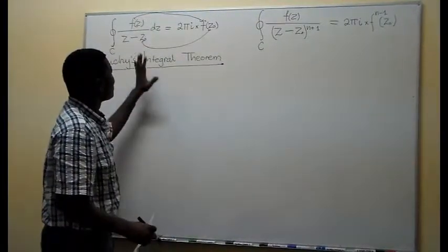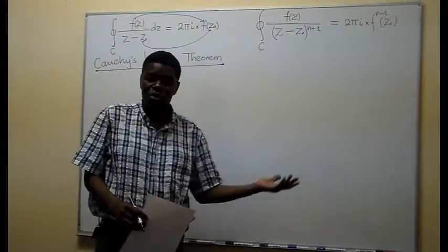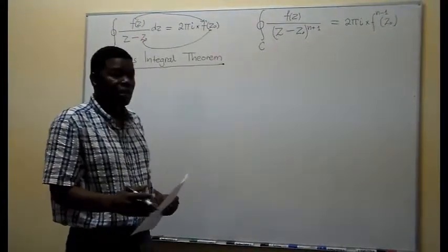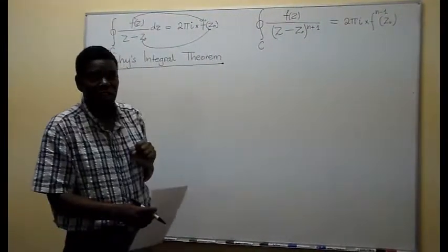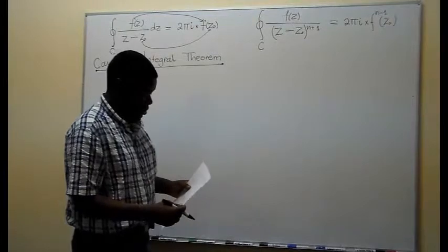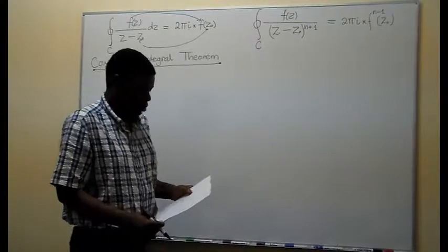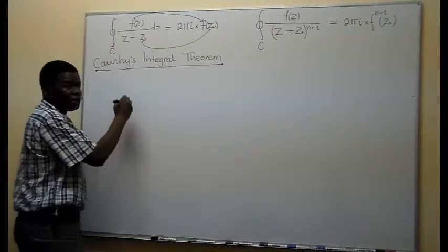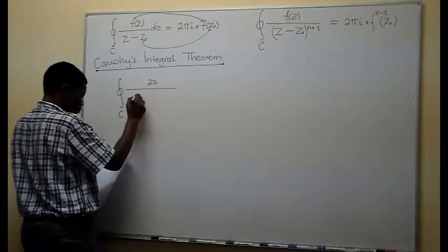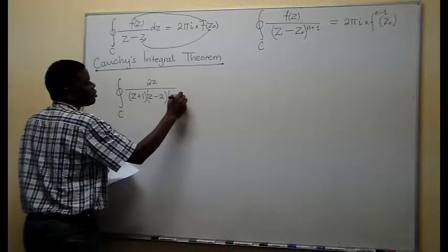We need to take an example and try to apply this theorem in combination with what you saw before: if a function has several poles within the closed curve, which is the path of integration, then each pole can be isolated and integrated. We are going to apply a similar manipulation here. This is the exercise: the integral on the closed curve C of the function 2z over (z+1)(z−2)(2z+1).